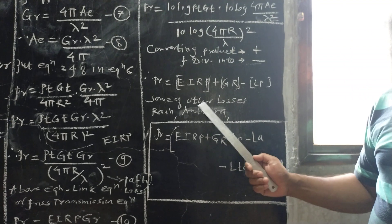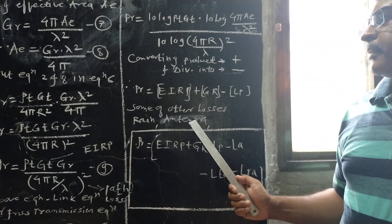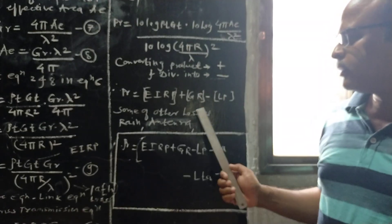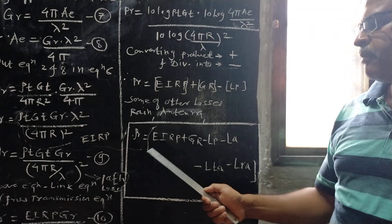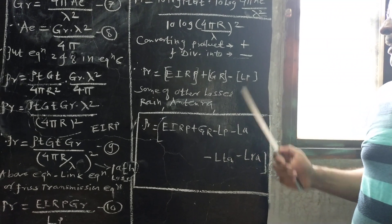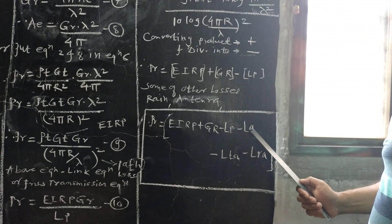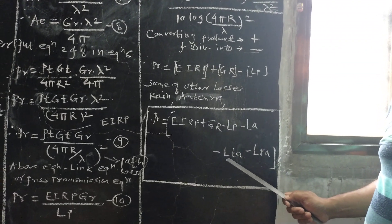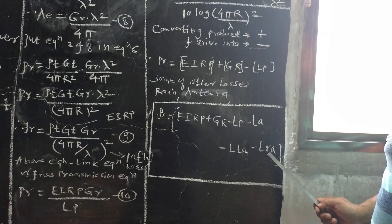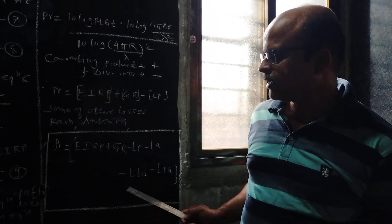But some other losses are also present — such as rain attenuation, transmitting antenna losses, and receiving antenna losses. If we account for all these losses, the final equation becomes: PR = EIRP + GR − LP − LA − LT − LR, where LA is atmospheric attenuation, LT is transmitting antenna loss, and LR is receiving antenna loss.